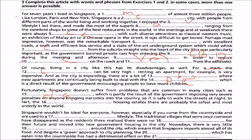So it is safe to walk the streets at night. In fact, the inner city housing estates are probably the safest and most orderly in the world. Singapore wouldn't be ideal for everyone, however — especially if you come from the countryside and are used to a rural lifestyle. The traditional villages that were once common have disappeared, as residents realized there were no prospects for their future and moved into new government housing in the city.